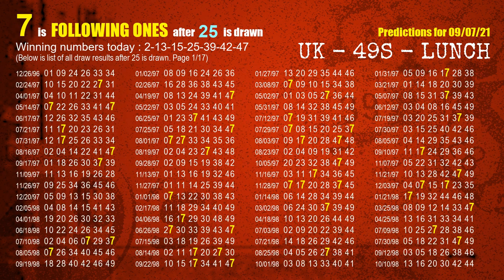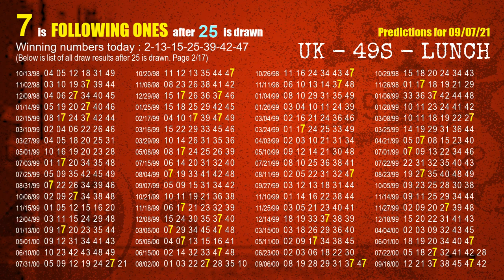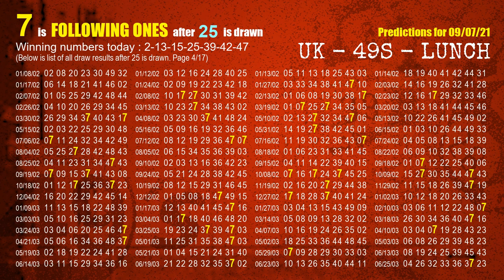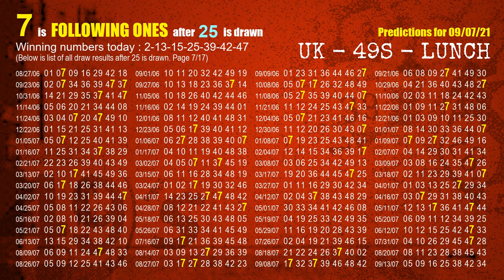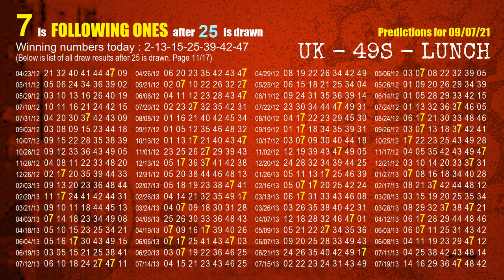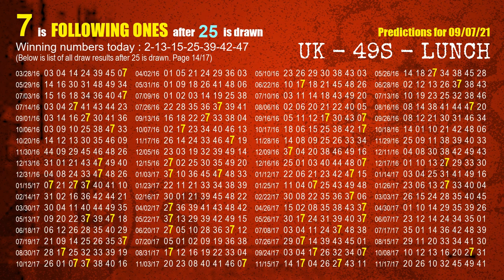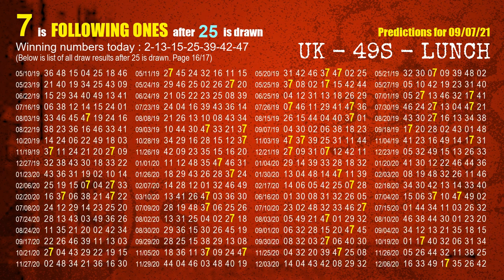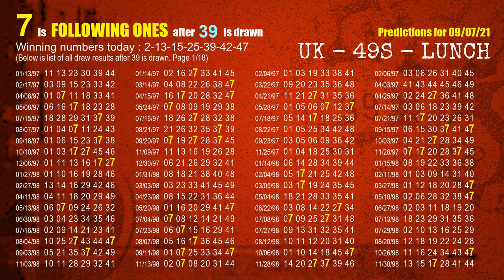The fourth winning number is 25. The most frequently following units digit is 7 when 25 is the winning number in the last draw. The fifth winning number is 39. The most frequently following units digit is 7 when 39 is the winning number in the last draw.